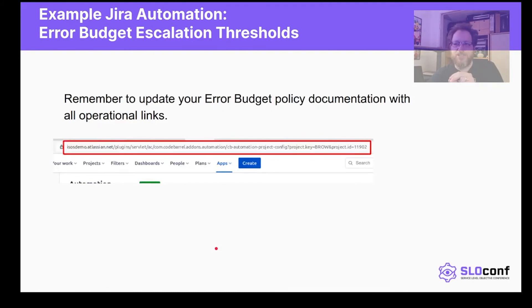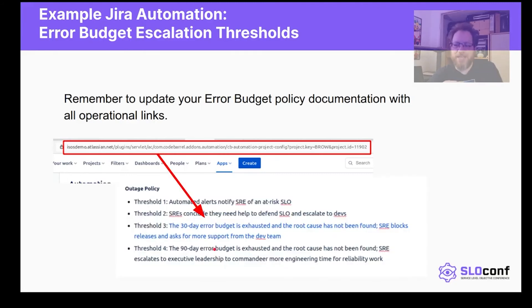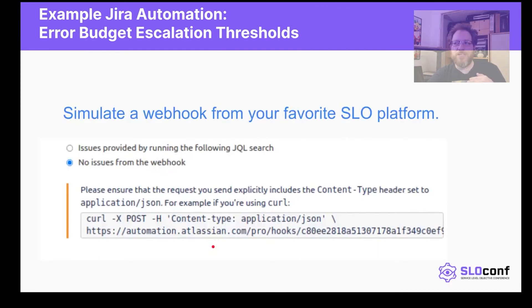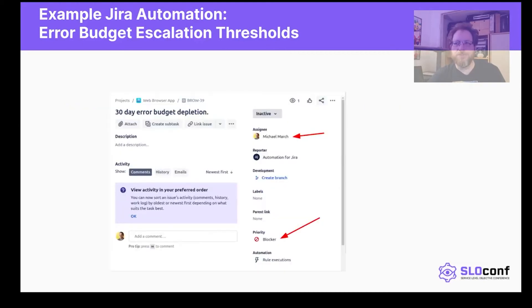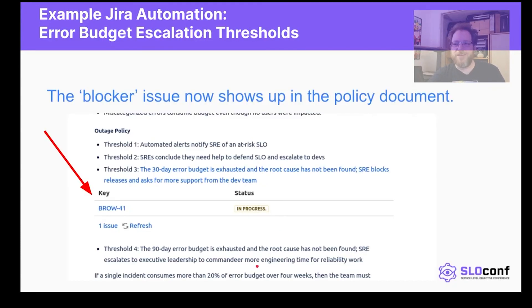We've created that automation, and we're going to take that link and put it back into the error budget policy — so not only does the policy say what's supposed to happen, it has a link back to the automation that enforces it. We then trigger that webhook to simulate what the SLO platform would do. You can see it creates the task with me as the service owner and the priority set as a blocker. That blocker now shows up as a live status of that threshold directly in the error budget policy document.